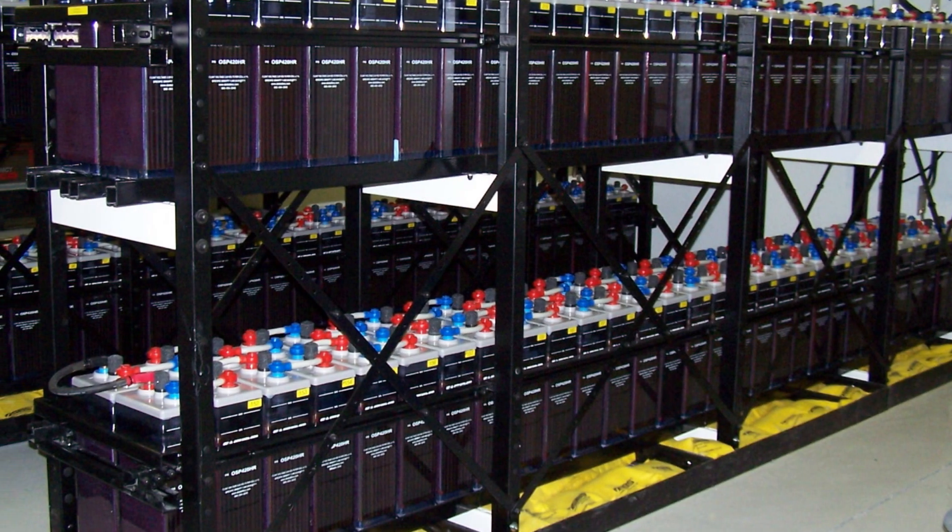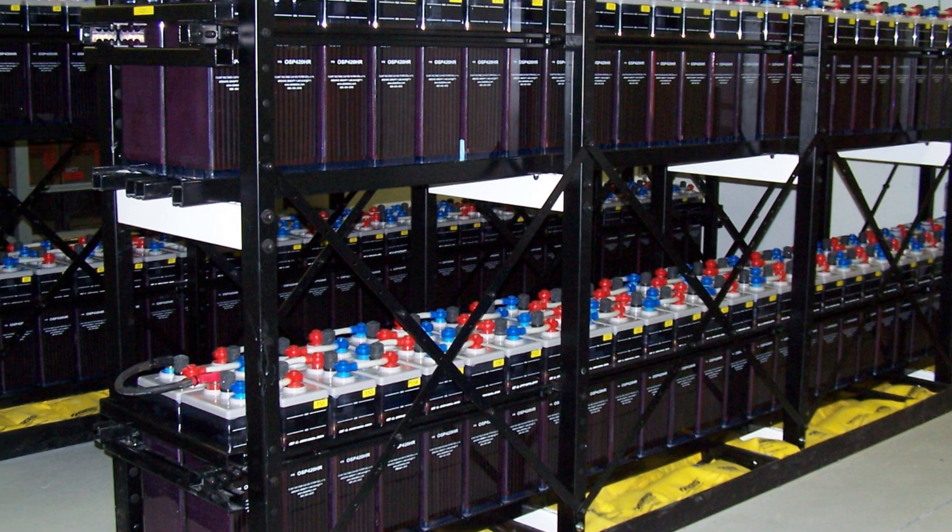Looking at stationary battery systems, they are basically exactly set up the same. You also have the modules connected to a string normally and this string is then a battery pack. There is a little bit of kind of unclarity regarding the wording because in stationary battery systems you often distinguish between pack and system. In an electric vehicle, pack and system is basically the same. A system means a battery that is in itself ready. It can be used, it has all the control inside, it is safe.